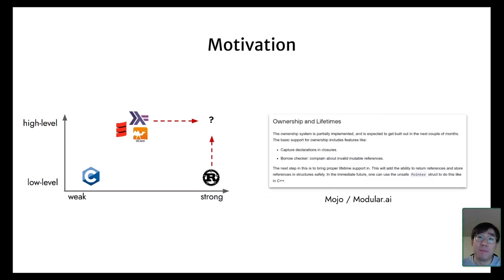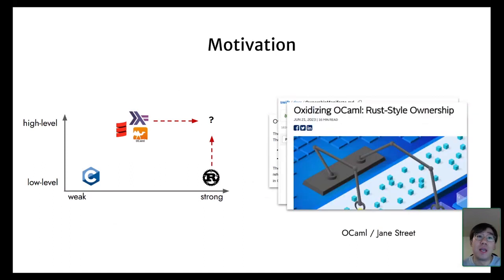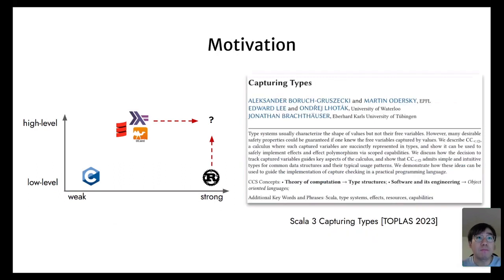Indeed, we have already seen this happening. For example, the Mojo language from Modular AI, Swift from Apple, and some OCaml variant developed by Jane Street are all adding Rust-like ownership types into existing high-level languages. Academic work also reflects these trends. Various substructural type systems have been studied over decades, and recently Haskell has an extension with linear types, which offers similar capability to constrain how resources are used. Scala 3 also adds a new feature called Capture Types, aiming at ensuring safe use of effects as capabilities—and the talk on capturing types follows right after this one.